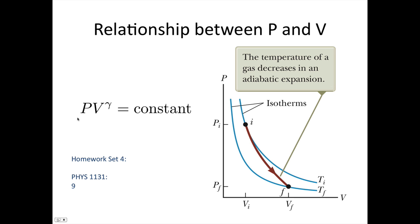Okay, so the equation for the relationship between P and V in the adiabatic case is PV to the gamma is constant. Now remember, gamma is C_P over C_V. You're given that on the formula sheet. A question to practice using this equation is 1131 set for question 9. It's a very hard question.